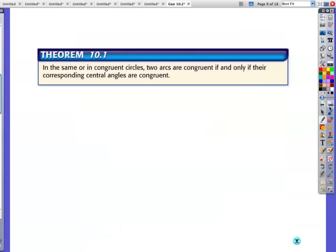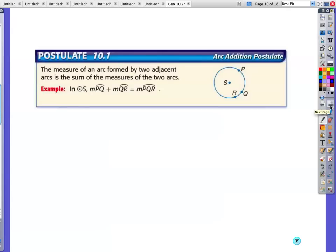Okay. Stuff that you probably are like, yeah, that makes sense. Actually, you know what, you guys? On this, I don't want you to write it down. In the same or incongruent circles, two arcs are congruent if and only if their corresponding central angles are congruent. In other words, if you have two arcs that are congruent, your central angles are congruent and vice versa. If your central angles are congruent, then your arcs are congruent. I don't even think we need to write that because I think that's, once you've seen it, it's more of a common sense thing.